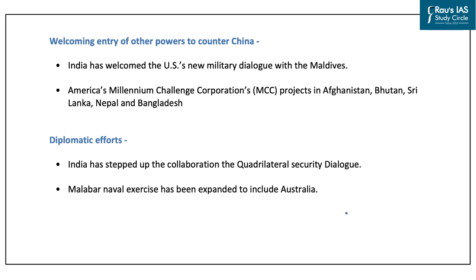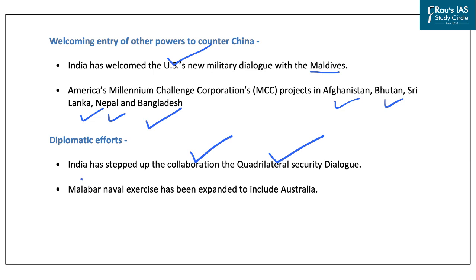India has welcomed the United States' new military dialogue with Maldives and various American projects in Afghanistan, Bhutan, Sri Lanka, and Bangladesh under America's Millennium Challenge Corporation. India has also taken diplomatic efforts to counter Chinese influence: stepping up collaboration under the Quadrilateral Security Dialogue and expanding the scope of the Malabar naval exercise to include Australia. These are steps taken to counter China's growing influence and further India's Neighborhood First policy and SAGAR strategy.